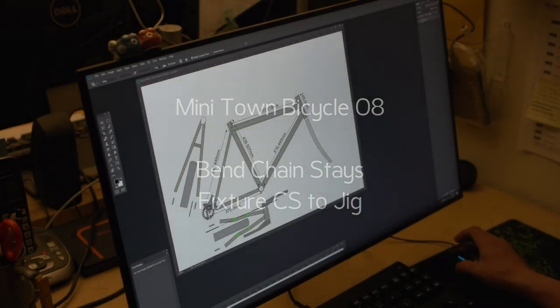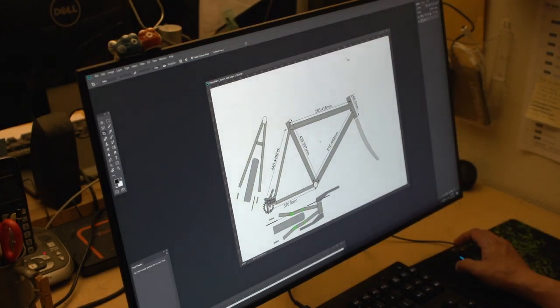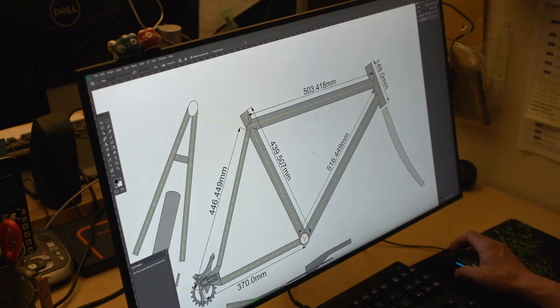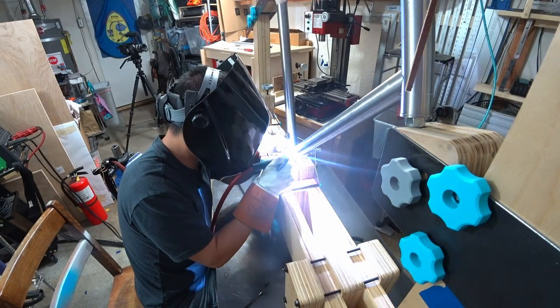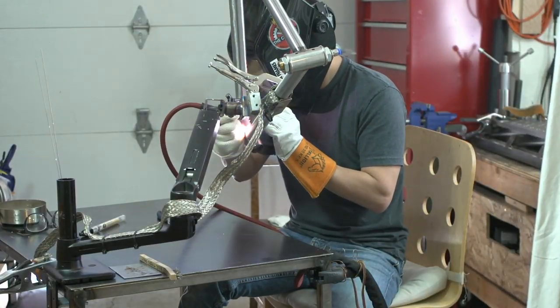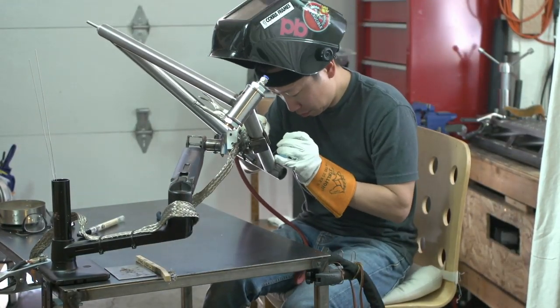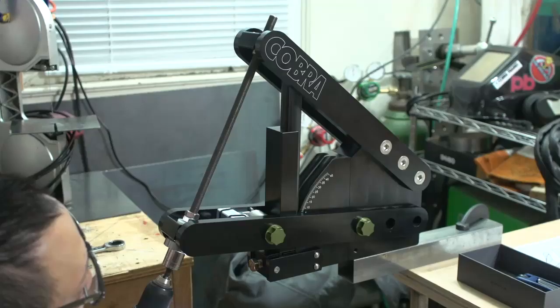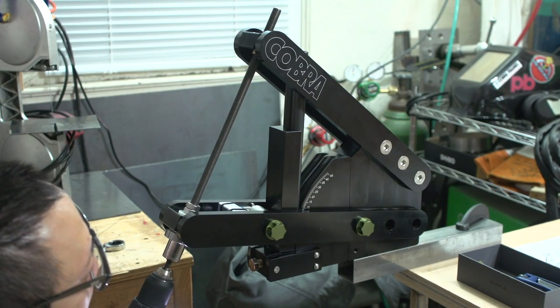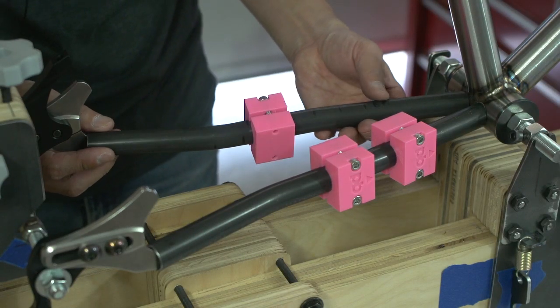Hello and welcome back. This is the Minitown Bicycle Series, video number 8. In the last video, we tacked up the main triangle, took it off the jig, and then welded the main triangle. In this video, we're gonna figure out the chainstay and dropout situation, bend the chainstays, and then fixture them up onto the jig. Let's get started.